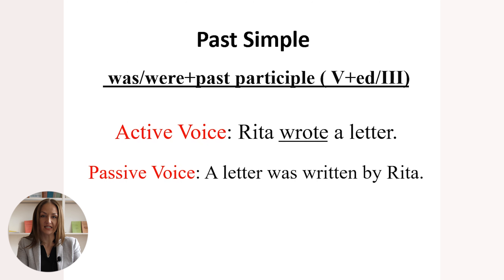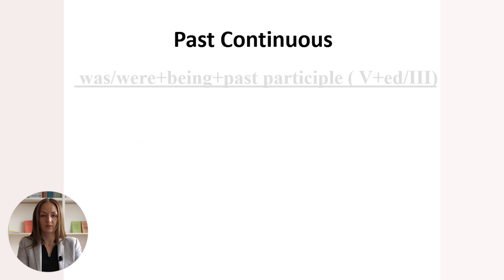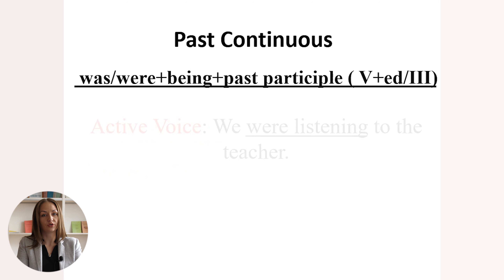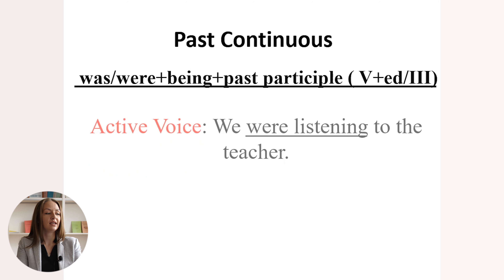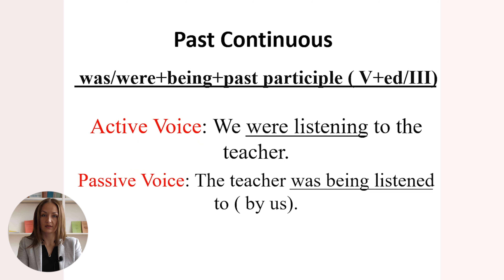Now let's see how to transform past continuous into its passive construction. Past continuous passive voice is formed with 'was' or 'were' plus 'being' plus the past participle — the '-ed' ending for regular verbs and the third column for irregulars. Active voice: 'We were listening to the teacher.' In passive voice: 'The teacher was being listened to by us.'